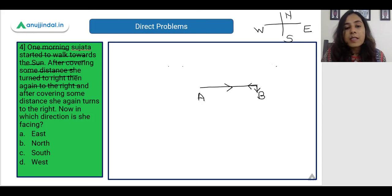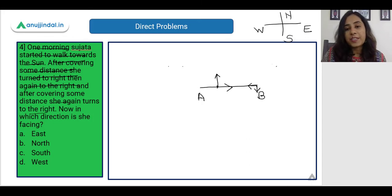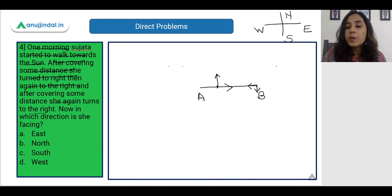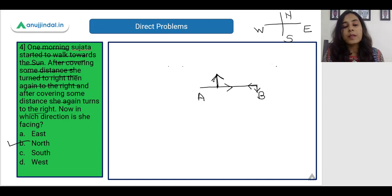After covering some distance she again turns to her right. So she turned to her right after taking a U-turn, which means she is facing the North direction — this arrow is marking Sujata's path and the direction she is facing is nothing but North. So the correct answer is option B. With these four problems we have completed the video based on the concepts and direct problems involving a person travelling, facing right, facing left, testing very basic concepts related to direction.